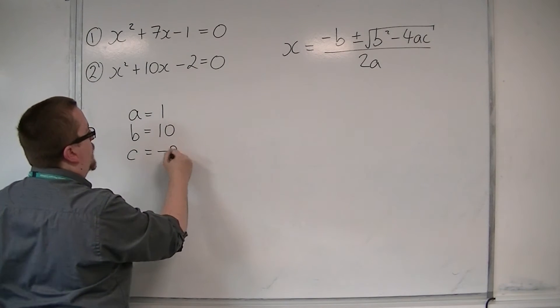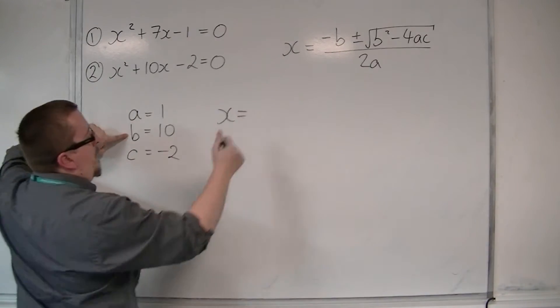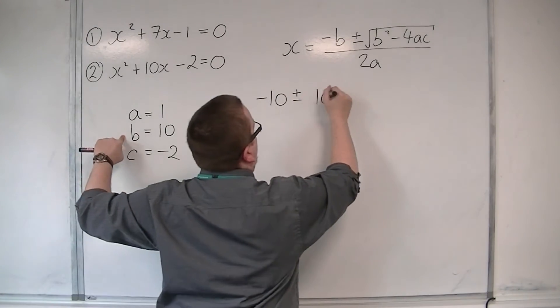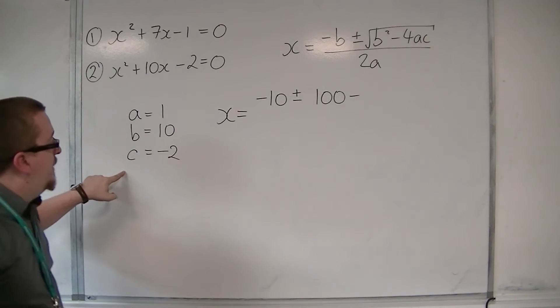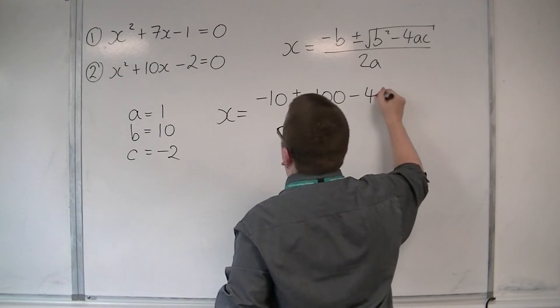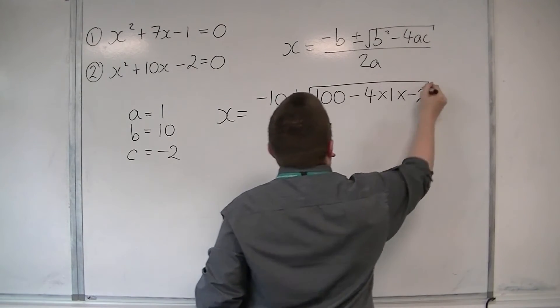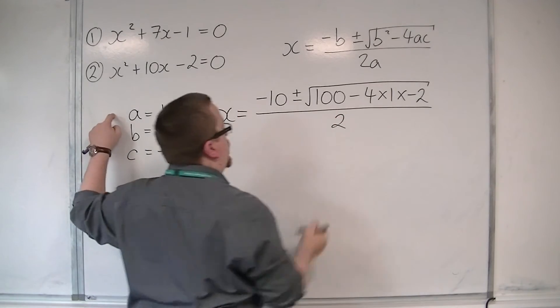So x is equal to minus b, so minus 10, plus or minus b squared, so 100. Take away 4 lots of a times c. So take away 4 lots of 1 times minus 2. Square rooted all over 2a, which is 2 lots of 1.